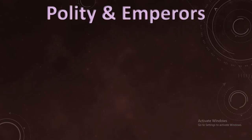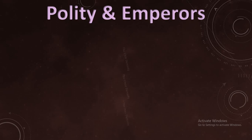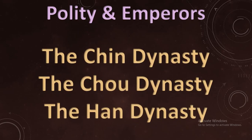We will move on to the polity and emperors. Many emperors have ruled over China during the early period. Among them, the main dynasties are the Qin Dynasty, the Zhou Dynasty, and the Han Dynasty. Today we are going to see about the Qin Dynasty.